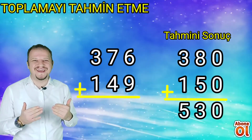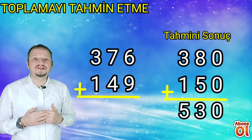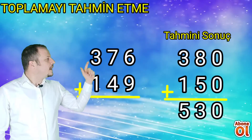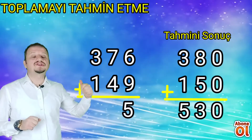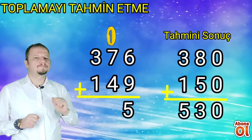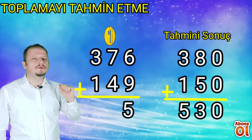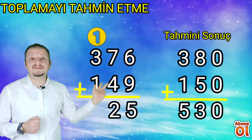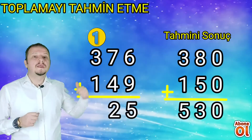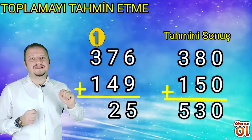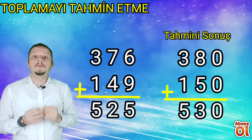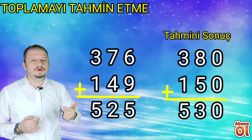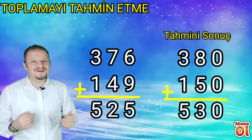Şimdi gerçek sonucu bulmaya sıra geldi. 376 ve 149 sayılarını toplayalım. 6 birlik + 9 birlik = 15 eder; 15'in 5'ini yazıyoruz, elde var 1 10'luk. 7 10'luk + 4 10'luk = 11, bir de elde vardı: 12 10'luk eder; 12'nin 2'sini yazıyoruz, elde 1 tane 100'lük var. 3 100'lük + 1 100'lük = 4, bir de elde var: 5 100'lük eder. İşlemimizin gerçek sonucu 525'tir. Tahmini sonucumuz ise 530'dur. 5 sayı farkla toplama işlemini tahmin etmiş olduk.